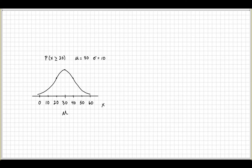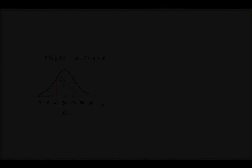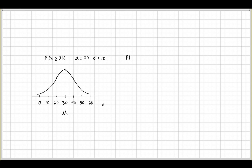If you wanted to continue with this and find the probability of X being greater than or equal to 20, that value would be here on the line and then you would shade it. Now consider another example: the probability of Z being less than or equal to 1.84. Here the random variable is Z, so we know there are z-scores and a z-table — this is a standard normal.